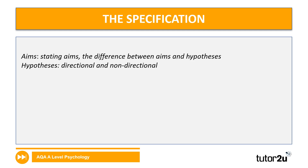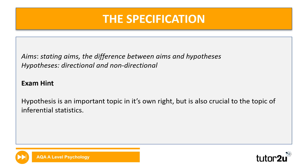Here's the specification, which is very, very important. What the specification says is aims — stating the difference between aims and hypotheses — and then hypothesis: directional and non-directional. Just a little exam tip here: hypotheses and questions about hypotheses are really important in their own right as part of research methods, but understanding hypotheses is also crucial to your understanding of inferential statistics. So a very good starting point for us.